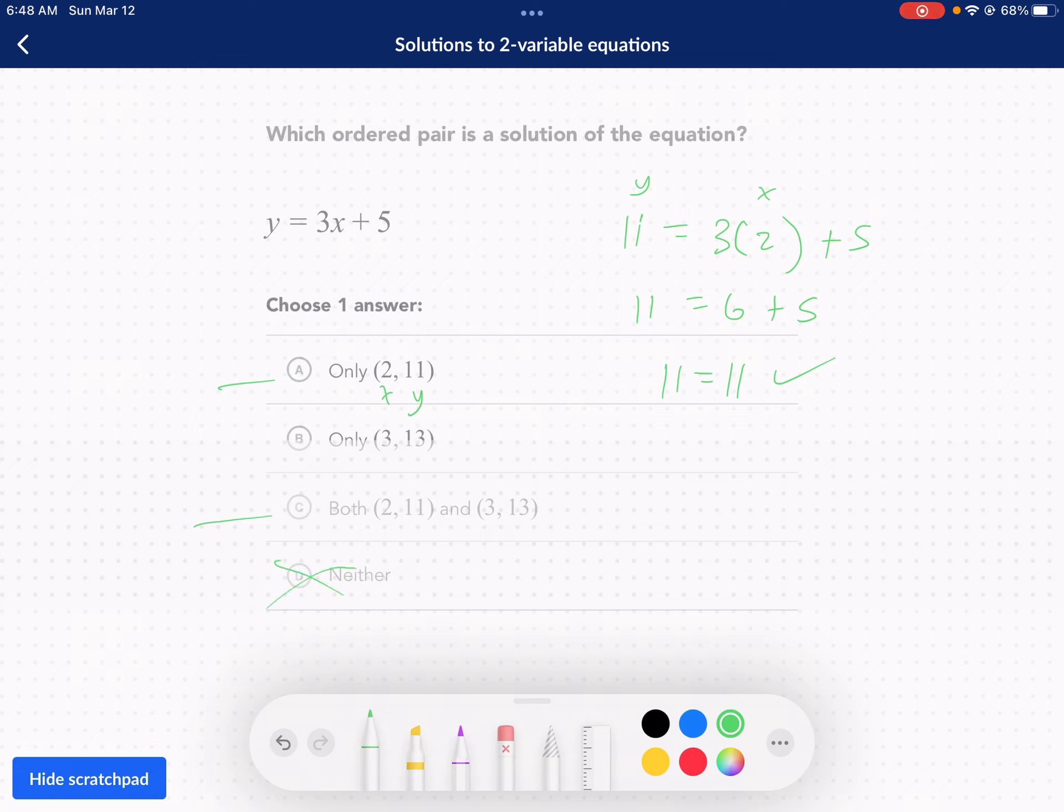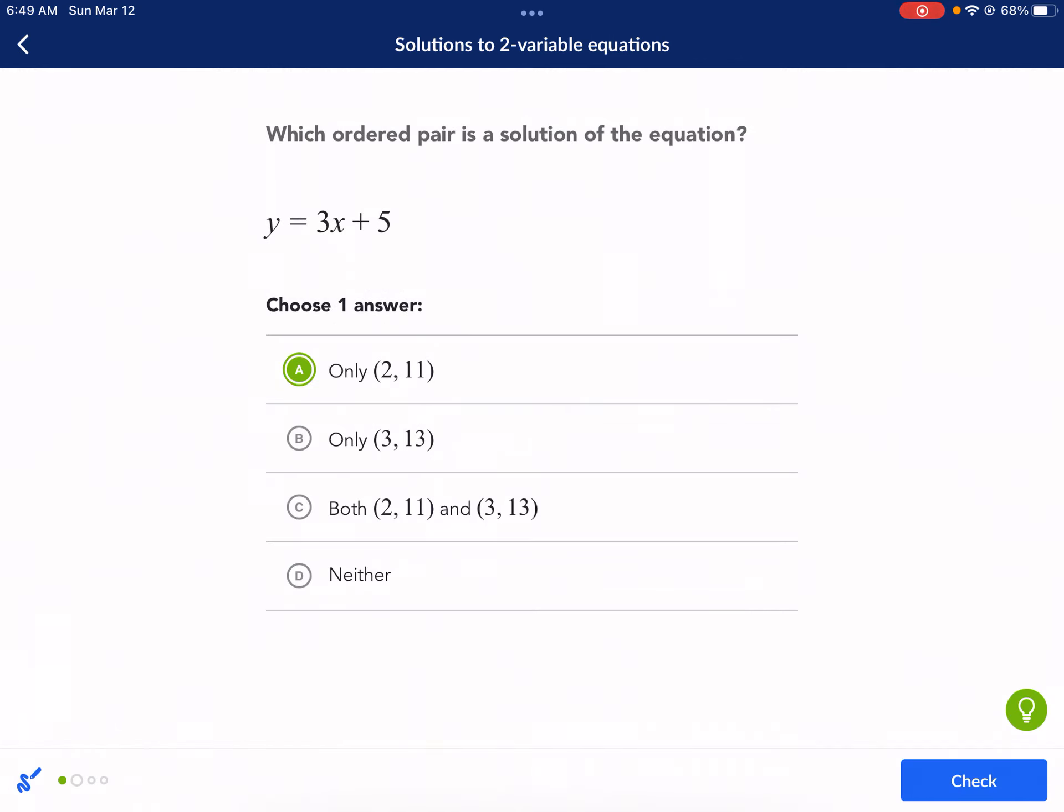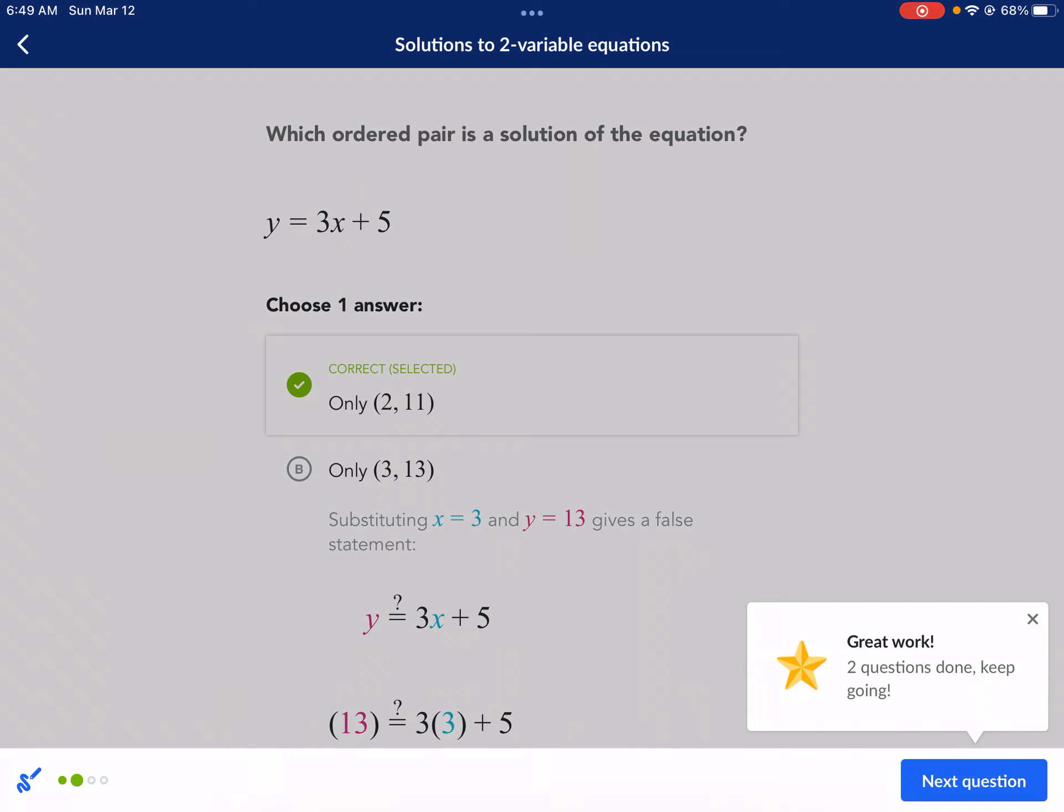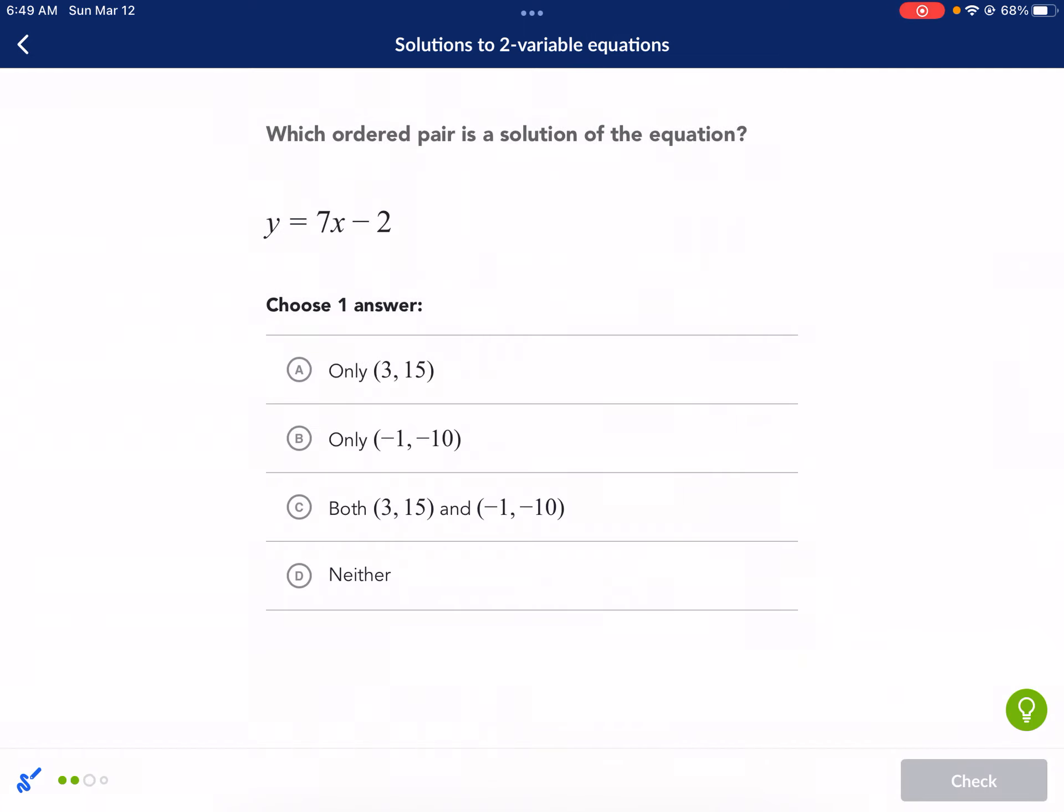So we just need to try option B. I'm going to put in 13 for Y equals 3 times 3 and then plus five. So we get 9 + 5. That equals 14, not 13. So this one is not equal. Therefore, B and C are out. And it's only option A because option A was the only one that made a true statement. And if you were to graph these on a coordinate plane, Y = 3X + 5 would be a line. And (2, 11) would be the only one of those points that is on the line. So that's what a solution to a two variable equation means. That the point is on the line.